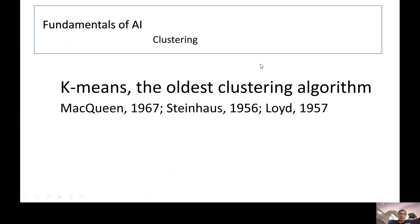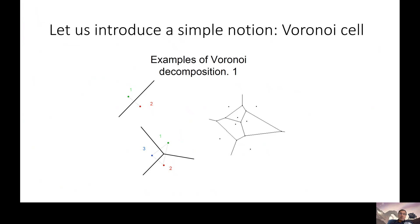First, let's discuss the principles of K-means. These go back to 1956, and the algorithm was more or less explicitly formulated in 1957. But before talking about K-means, let's discuss one notion we will need to understand how it works: the notion of the Voronoi cell.